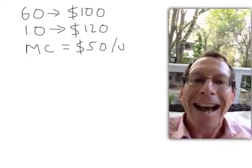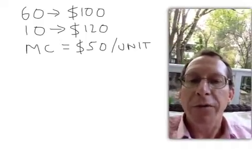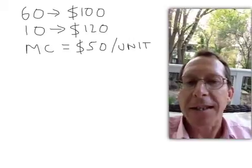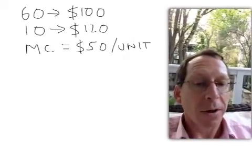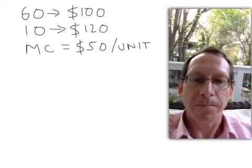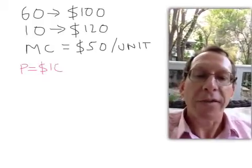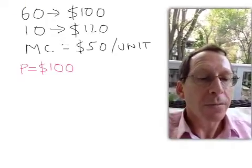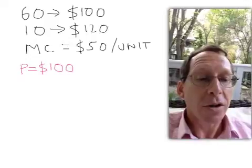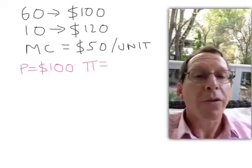First, suppose the monopoly can't price discriminate — it has to set one price for all customers. There are two obvious choices. If the monopoly charges $100, it will sell to all 70 customers, making $7,000 revenue. Its costs are $50 per unit times 70 customers, which is $3,500. So its profit is $7,000 minus $3,500, giving a profit of $3,500.